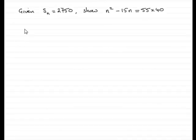Now in this part of the question we're given the sum of the first n terms, which I've written as S with a little subscript n, equals 2750, and we've got to show this result: n squared minus 15n equals 55 times 40.